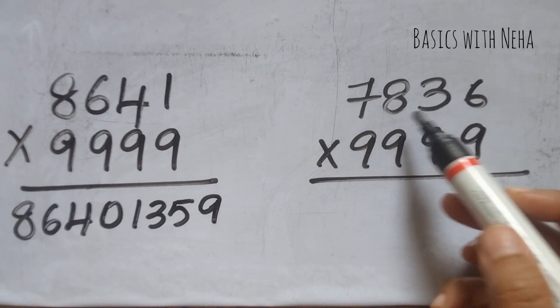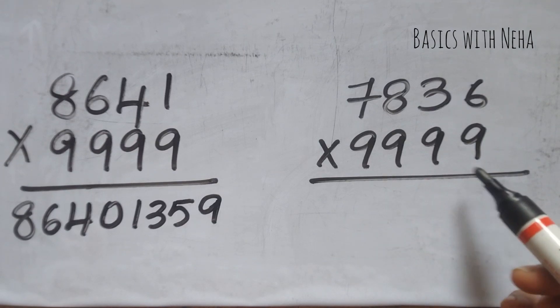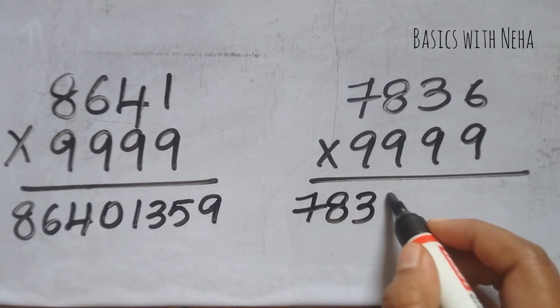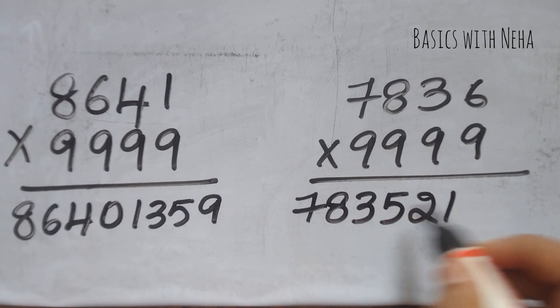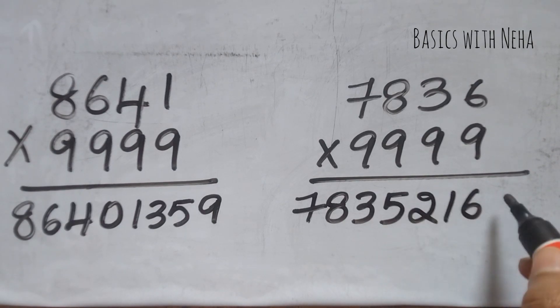Likewise, 7836 into 9999 will be 7835. 9 minus 7 is 2, 9 minus 8 is 1, 9 minus 3 is 6, 9 minus 5 is 4.